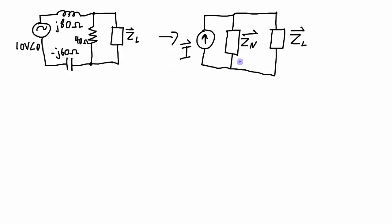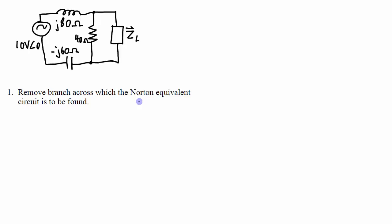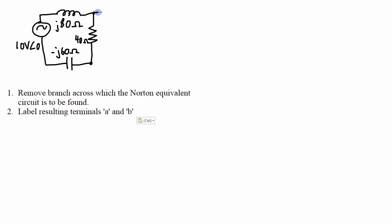So how do I go about doing this process? Well let's look at that step by step. The first thing to do is to remove the branch across which the Norton equivalent circuit is to be found. So I'm going to remove that branch, basically just remove the load. The second step is to label the resulting terminals A and B.